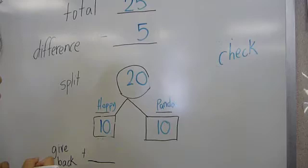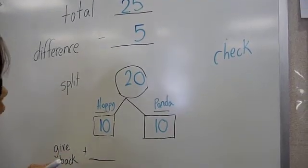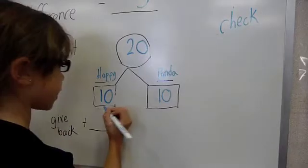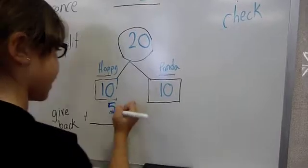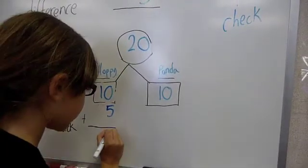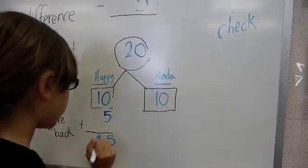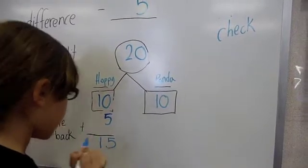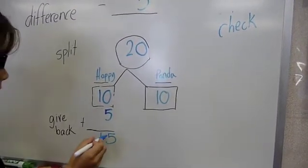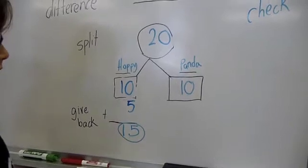But remember, Hoppy has 5 more than Panda. So we're going to add the 5 here. And 0 plus 5 is 5, and 1 plus 0 is 1. And so our answer is 15. Hoppy has 15, and Panda has 10.